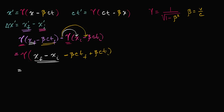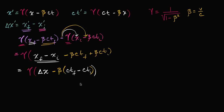So I can rewrite this as gamma times change in x, minus beta times ct final minus ct initial. And ct final minus ct initial is just going to be change in ct. So we get: this is all equal to gamma times change in x, minus beta times change in ct.